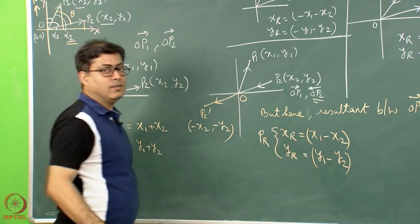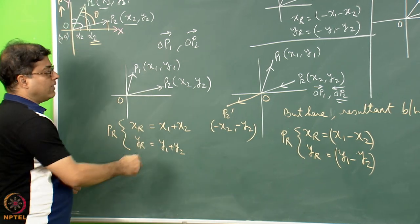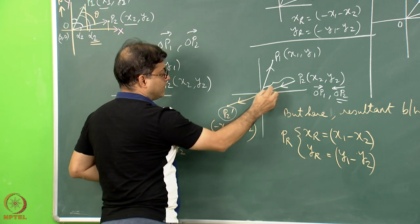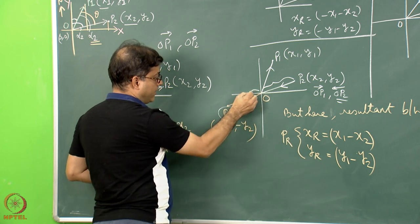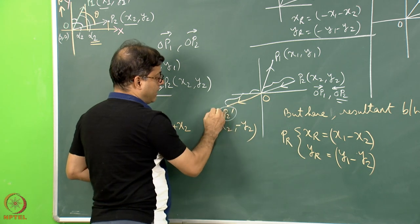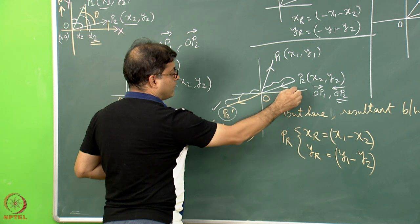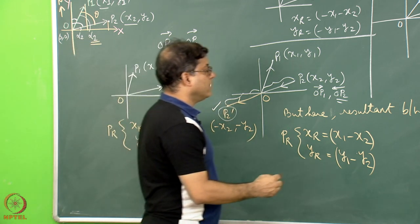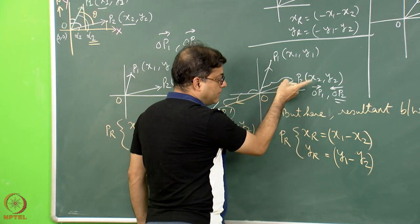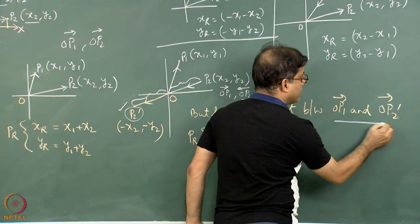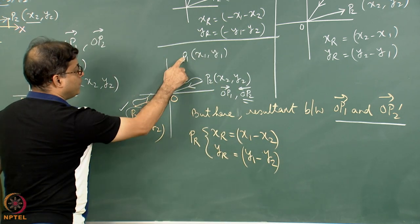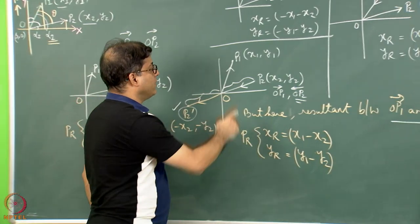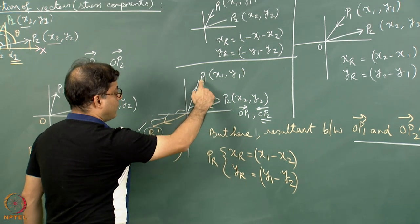Here, instead of directly adding, we first find the P2-dash coordinate. If P2 is at (x2, y2), we extend the line in the opposite direction maintaining the same distance to get P2-dash. If P2 is at (+x2, +y2), then in the opposite quadrant P2-dash is (−x2, −y2). So the resultant between OP1 (forward) and the stress P2→O is equivalent to finding the resultant between OP1 and OP2-dash, giving xr = x1 minus x2 and yr = y1 minus y2.